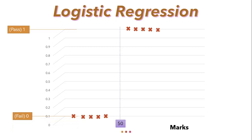Now suppose if I want to classify a future data point, can we use linear regression here? Let's have a quick recap of linear regression. Linear regression is nothing but drawing a straight line such that the distance between these data points and the hyperplane should be minimum, as we have learned earlier. Based on this, let's say we have created a straight line as shown on the screen.